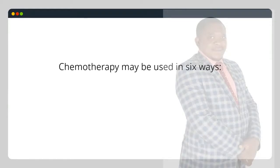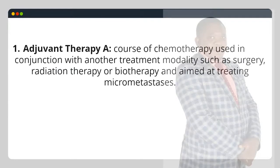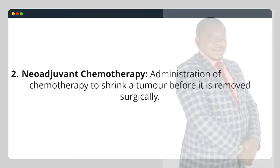Chemotherapy may be used in six ways. 1. Adjuvant therapy: a course of chemotherapy used in conjunction with another treatment modality such as surgery, radiation therapy or biotherapy, and aimed at treating micrometastases. 2. Neoadjuvant chemotherapy: administration of chemotherapy to shrink a tumor before it is removed surgically.